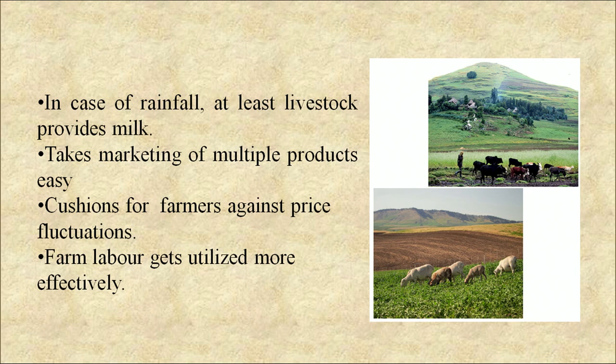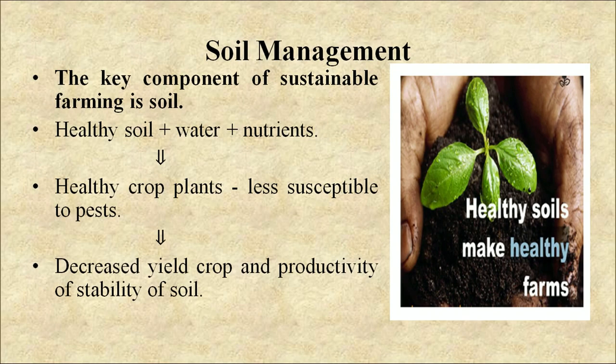Now come to soil management. A healthy soil is a key component of sustainable agriculture. Healthy soil along with water and nutrients produces healthy crops — plants that are less susceptible to pests and diseases. Accordingly, soil must be protected and nurtured to ensure long-term productivity and stability. Methods of protection include using cover crops, compost, reducing tillage, and conserving soil moisture by dead mulches, which increases water holding capacity of the soil. Significant improvement in crop production has been achieved by using conventional methods of selection and plant breeding.